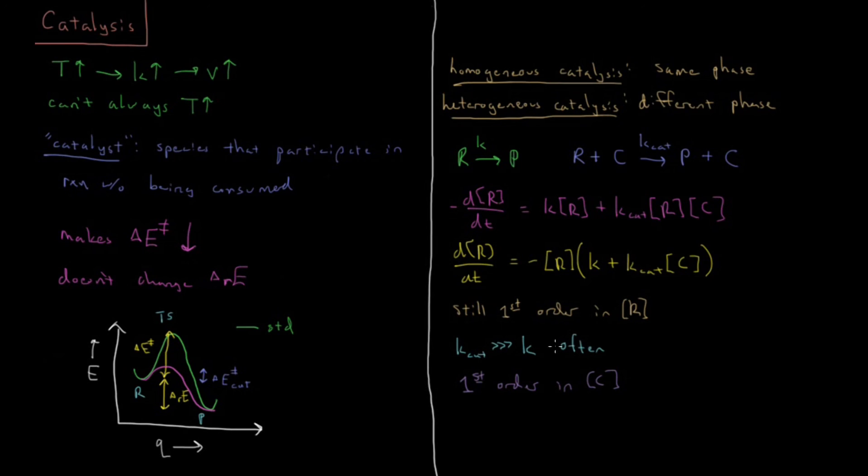And because this Kcat is often so large, what you can often have is very effective catalysis even at quite low concentrations of catalyst. So even at low concentration of catalyst, Kcat times C can still be large.